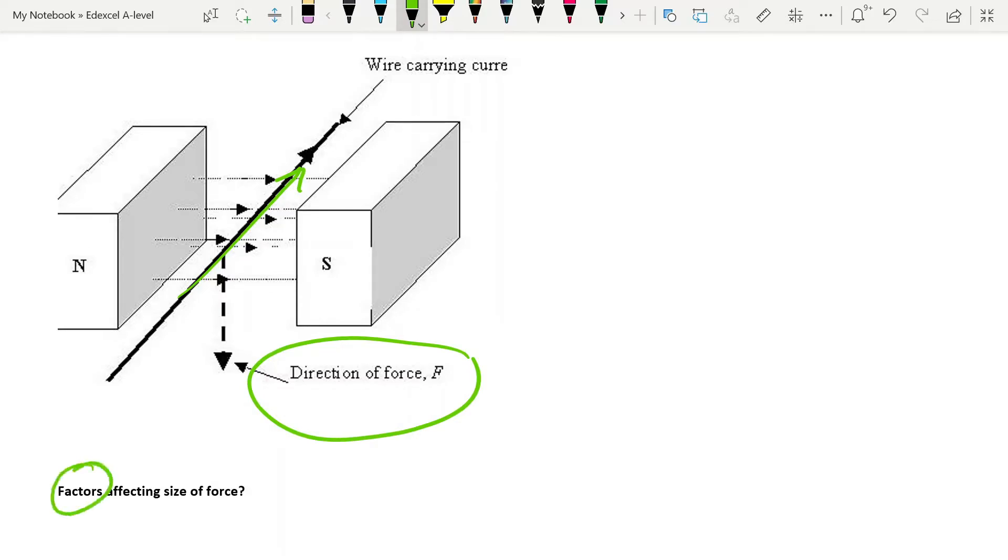Let's think about what factors might affect the size of this force and they're fairly obvious, or at least the first two certainly are. The first factor is going to be the magnetic flux density, the strength of the field. If you've got a stronger field in there you're obviously going to get a greater force because you're going to get a stronger field interacting with the field around the wire.